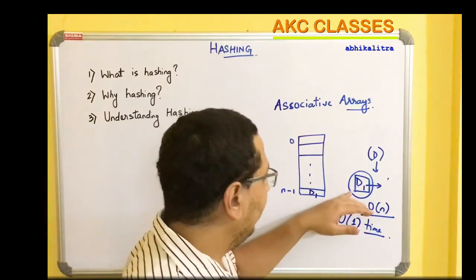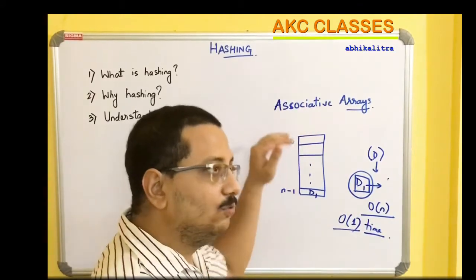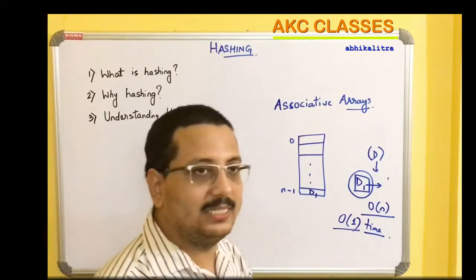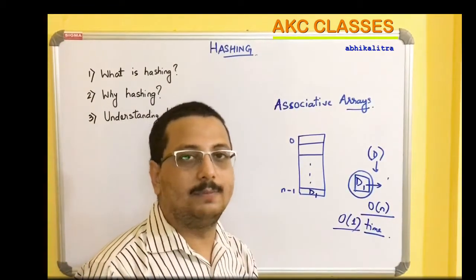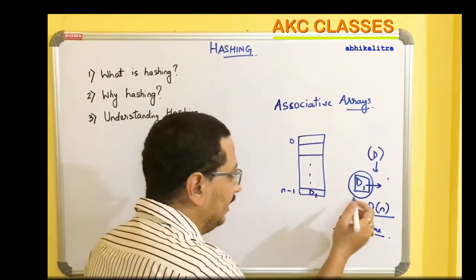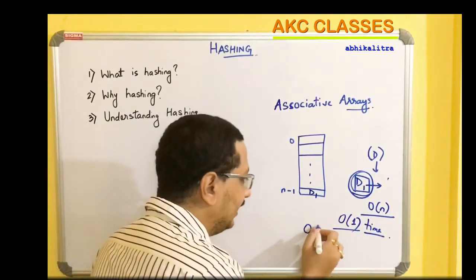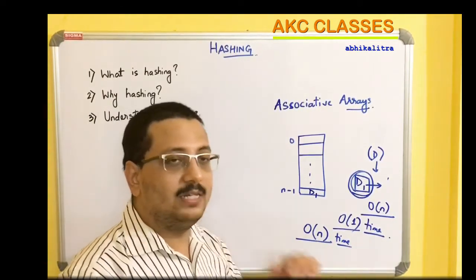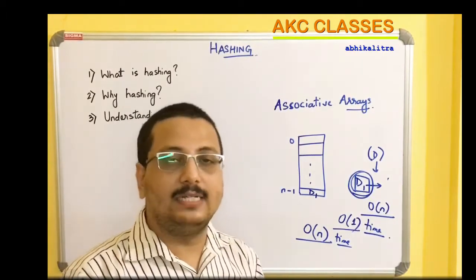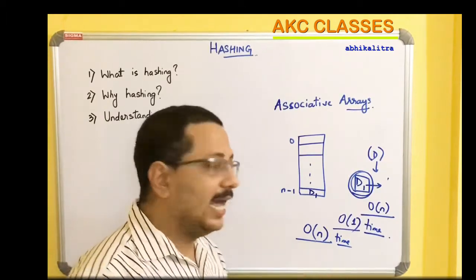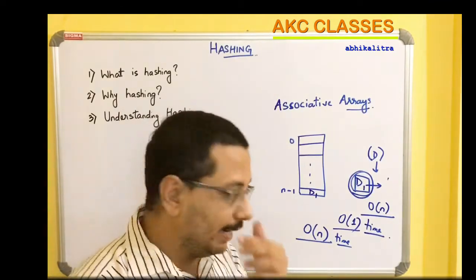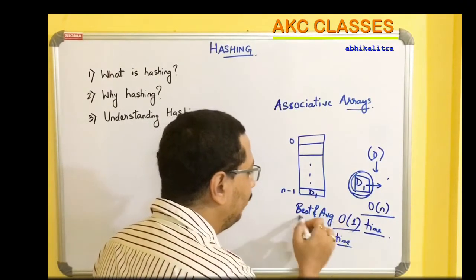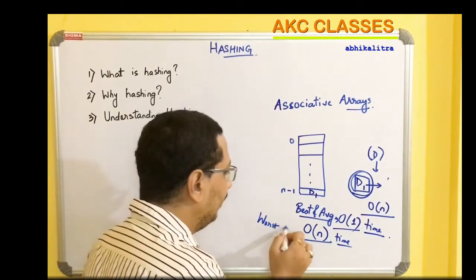Obviously, if searching d1 using linear search requires O(n) time and we can retrieve it using hashing in O(1) time, then we should think about this concept of hashing. There can be some situations where, in the worst case, hashing can also take O(n) time. We will not discuss the possibility right now; when we discuss hashing in more detail we will come to that point. For now, we understand that hashing in its best and average case requires O(1) time, while its worst case can be O(n) time.